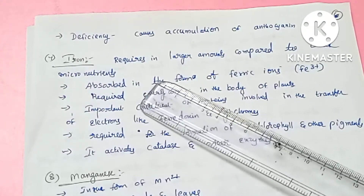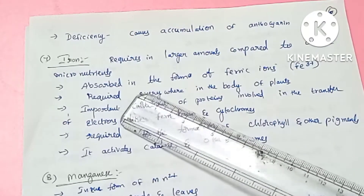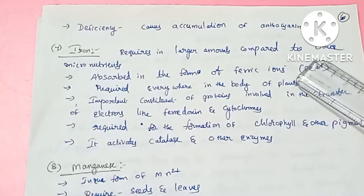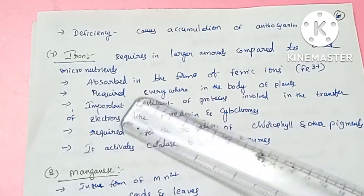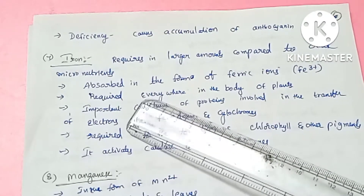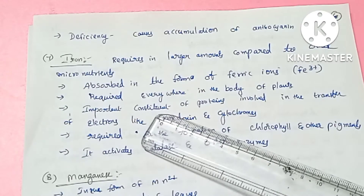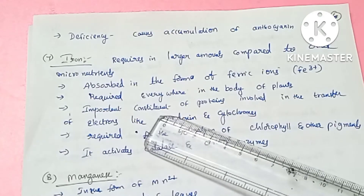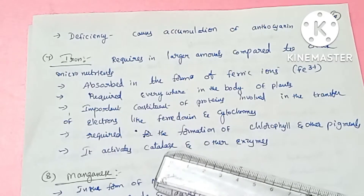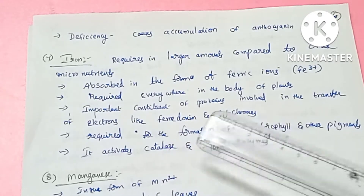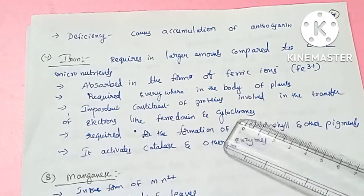Iron is absorbed in ionic form and is required in all parts of the plant. It is a component of proteins involved in electron transport, such as ferredoxin and cytochromes.